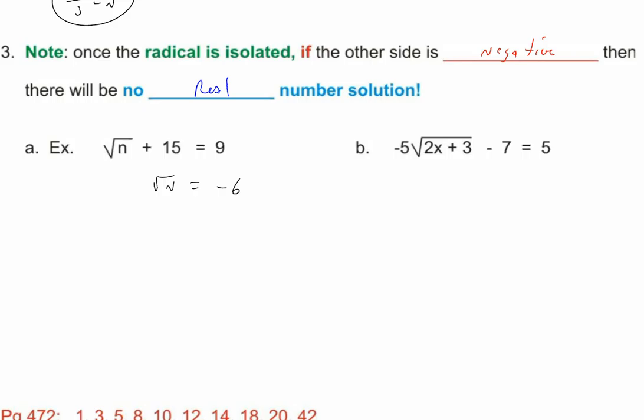You can't take the square root of something to end up at negative 6. And remember, we can't take the square root of negative numbers because that's an imaginary number. What's the square root of 36? 6. It's not negative 6. The square root of negative 36 isn't even negative 6, because what's negative 6 times negative 6? Positive 36 doesn't get you to negative 36. So there's no solution. It doesn't work. When you get to the point where the radical is isolated, the other side's negative, say no real number solution.